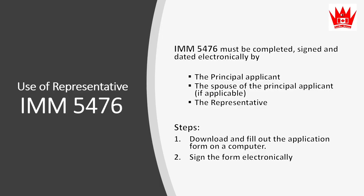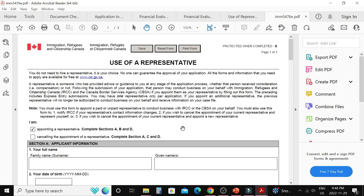The next form is Use of Representative — IMM 5476. You only need to complete this form if you are using a representative — for example, if parents are taking help from a family member or friend to complete their application and that person wants to do business with IRCC on their behalf. IMM 5476 must be completed, signed, and dated electronically by the principal applicant, the spouse of the principal applicant if applicable, and the representative. Just download, fill out on computer, sign electronically, and you are done.